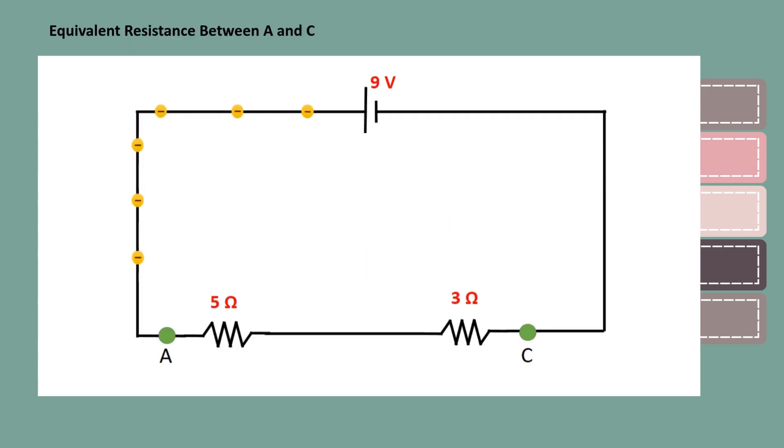Now, take a closer look at how the current flows between points A and C. The entire current passes through each resistor one after the other, which means they are connected in series.